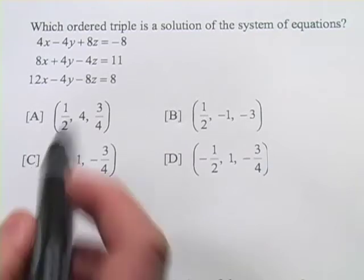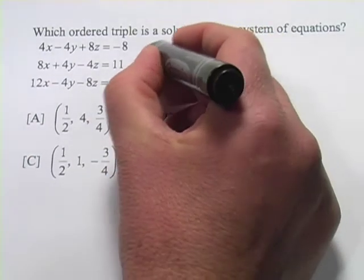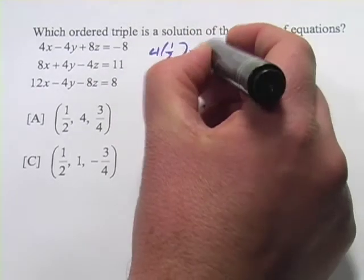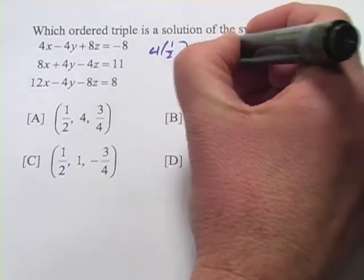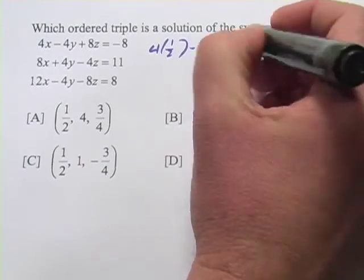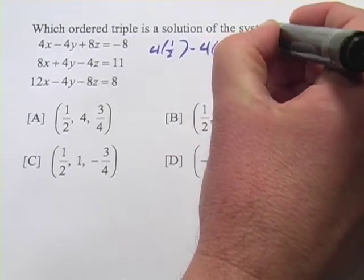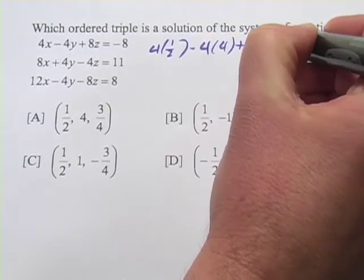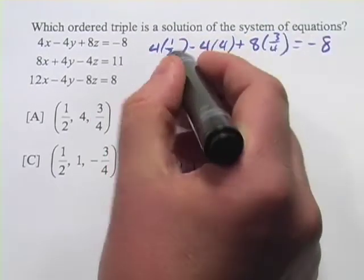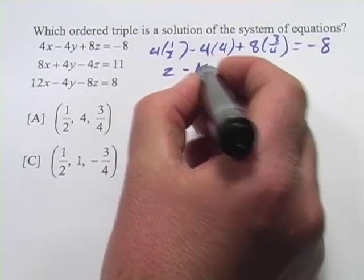Let's start with A. So I'm going to put in 1/2 for x, so 4 times 1/2, minus 4 times, and we'll put in a 4 for y, and plus 8 times 3/4 for z equals negative 8. So what do we get here? 4 times 1/2 is 2, minus 16,